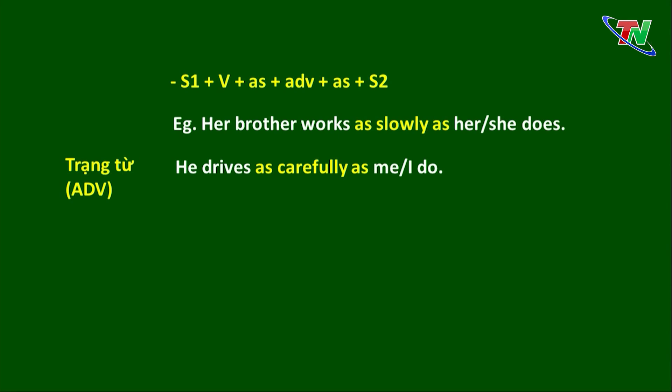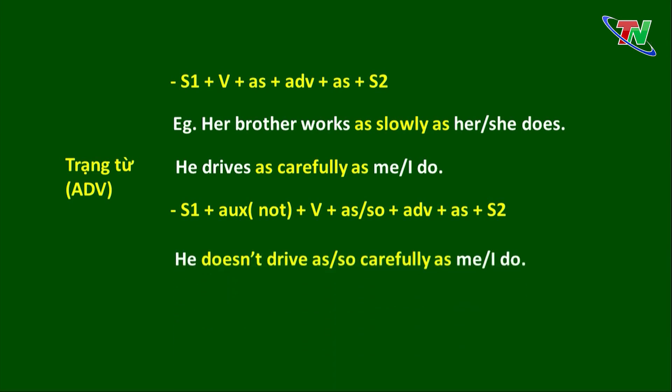Ở dạng phủ định của so sánh ngang bằng với trạng từ, cấu trúc: Chủ ngữ 1 + trợ động từ + not + động từ + as/so + trạng từ + as + chủ ngữ 2. Ví dụ: He doesn't work as carefully as me, hoặc I do. Hoặc: He doesn't work so carefully as me. We don't work as hard as them, hoặc We don't work so hard as them, hoặc they do.